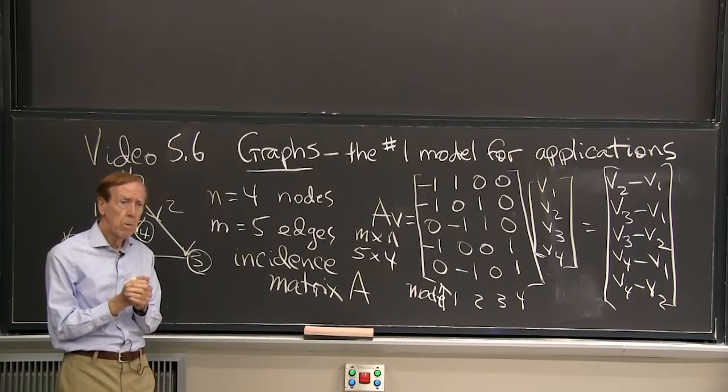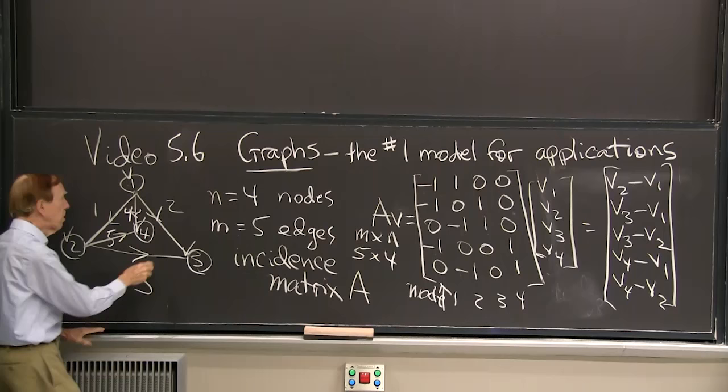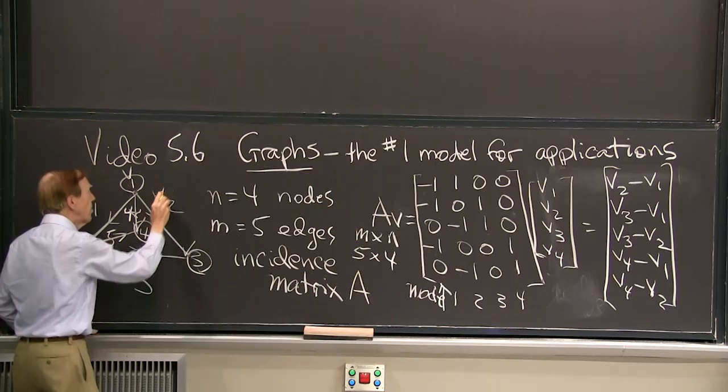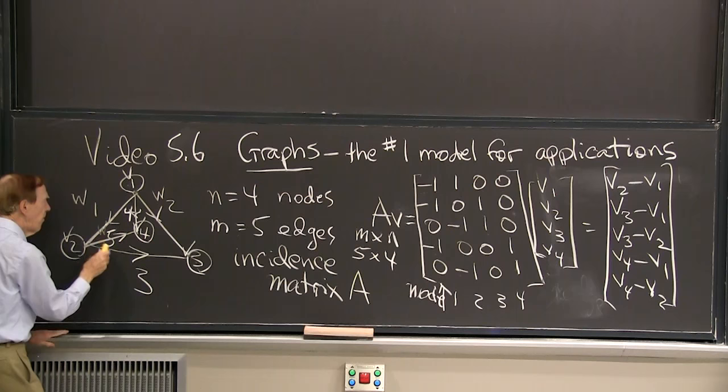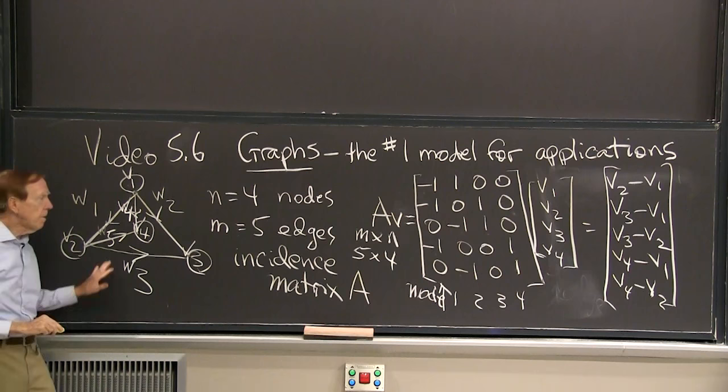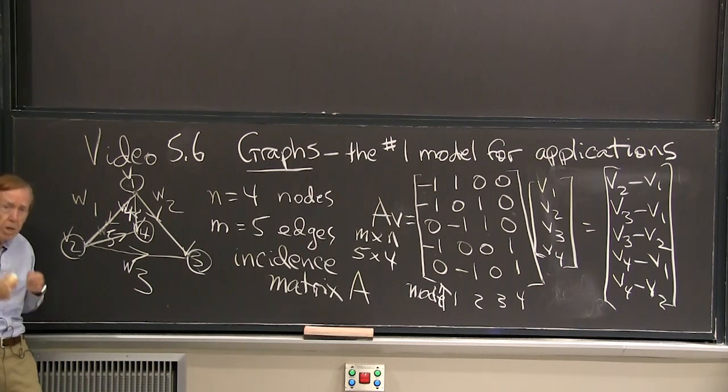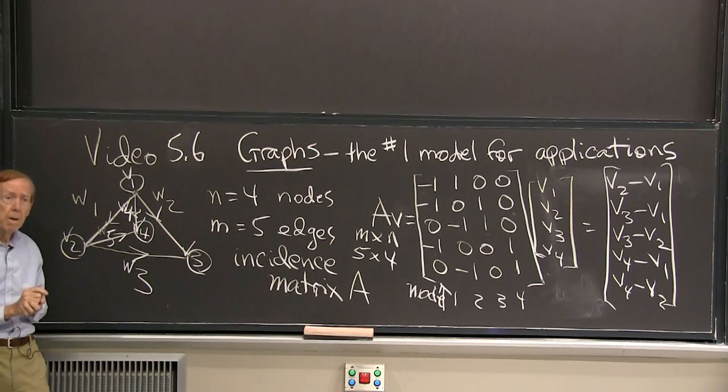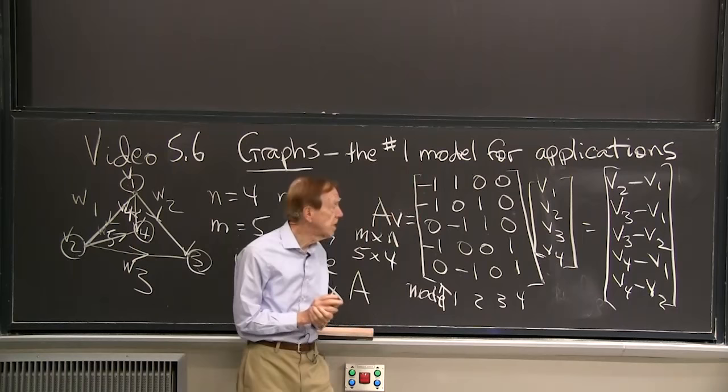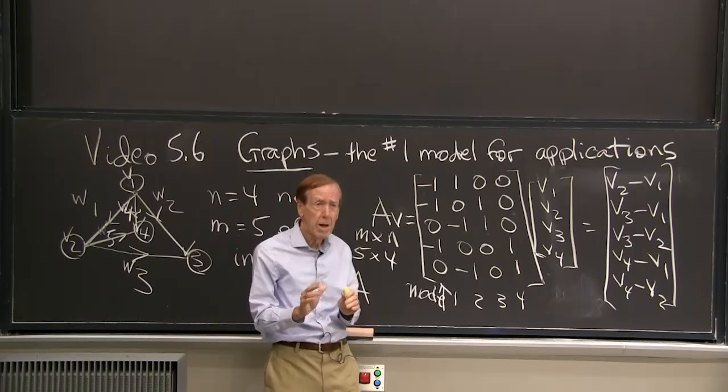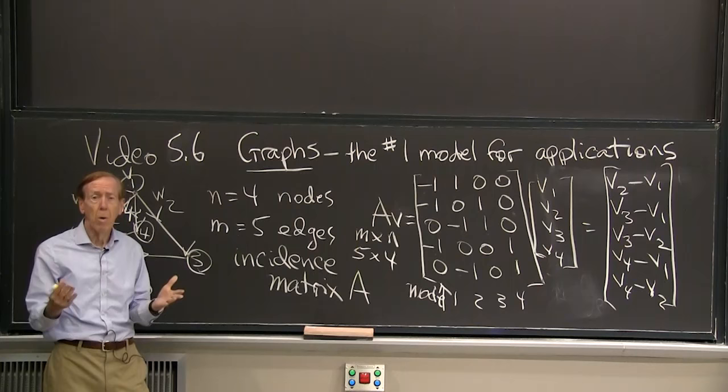Well, so now I'm looking for the flows. So can I call those W, say, for the flows? So I have a W2 is the flow on that edge. A W1 is a flow there. A W5, a W3, and a W4. My pair of unknowns, and that's the beauty of this picture, is the voltages V1 to V4 at the nodes, and the currents, the flows, W1 to W5 on the five edges. So now, and I've seen that AV gives me the voltage differences. I'm going to briefly, briefly approach the fundamental laws of flow, of current flow, of flow in any network.